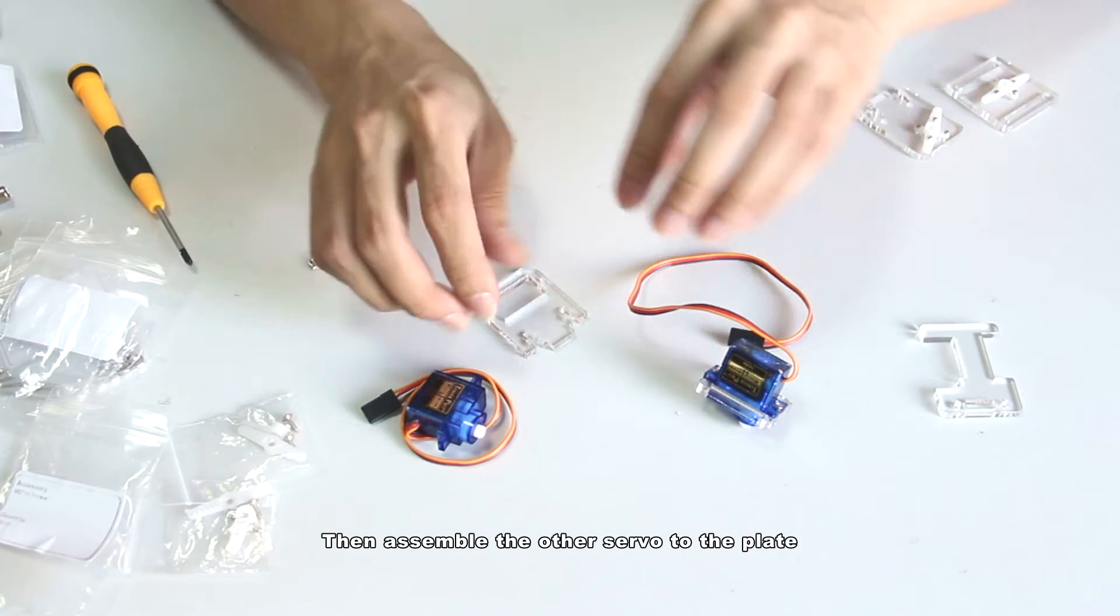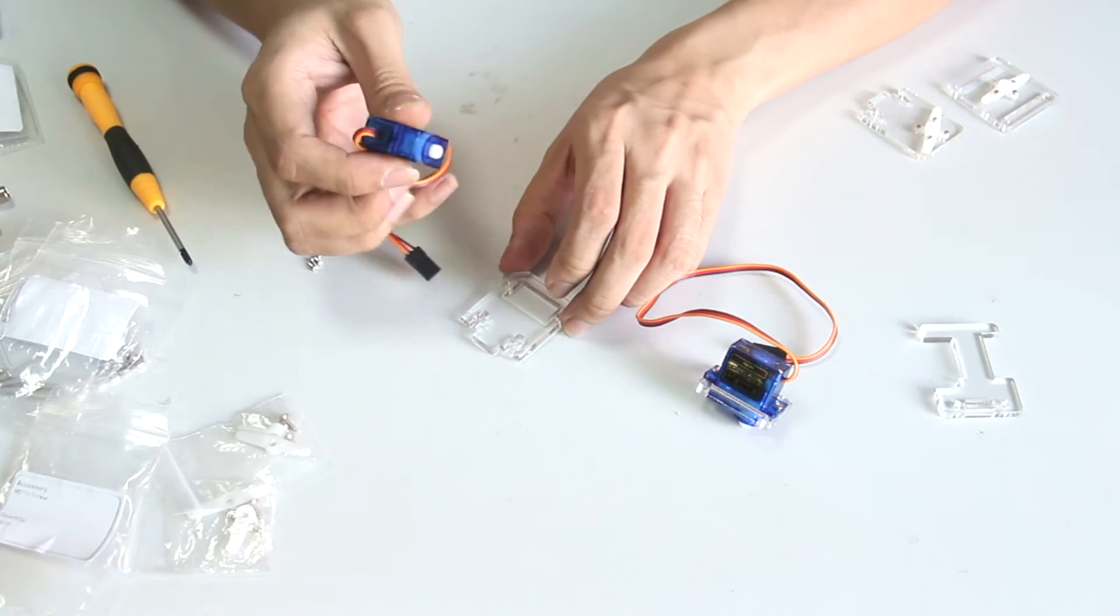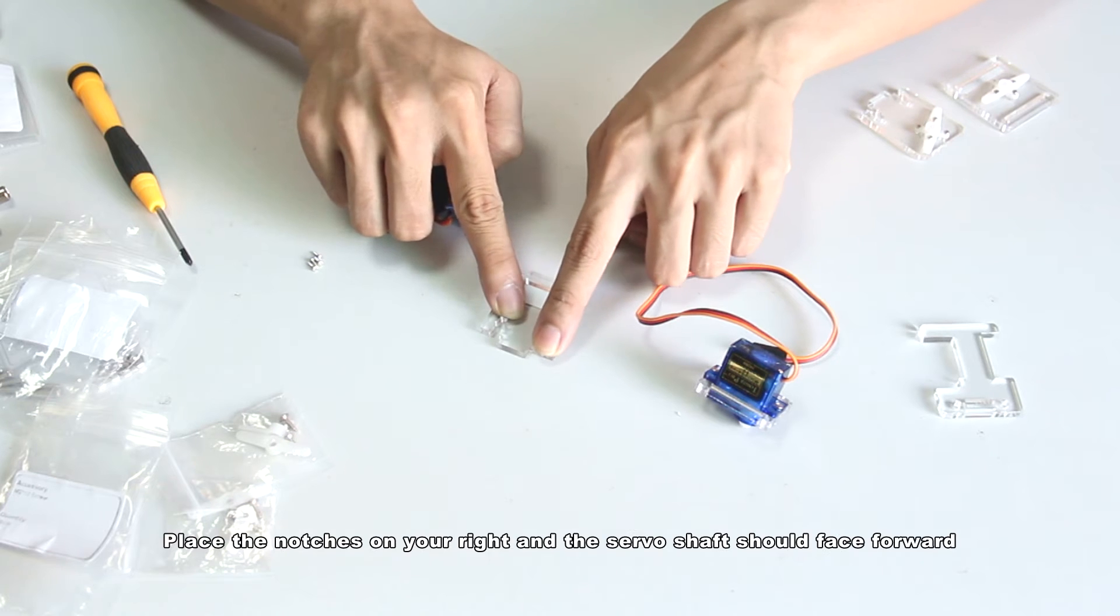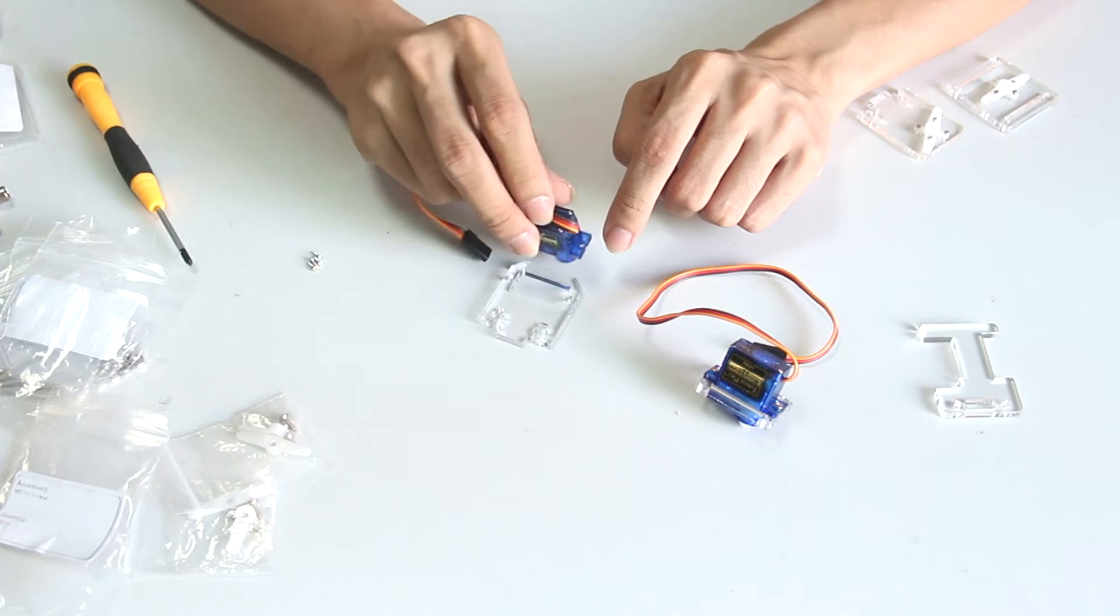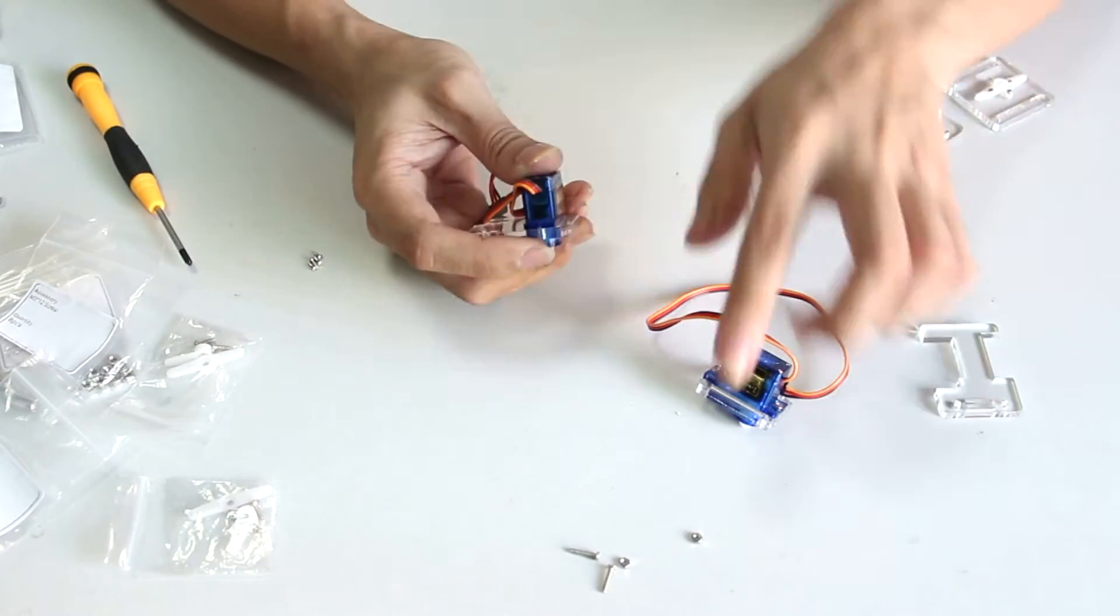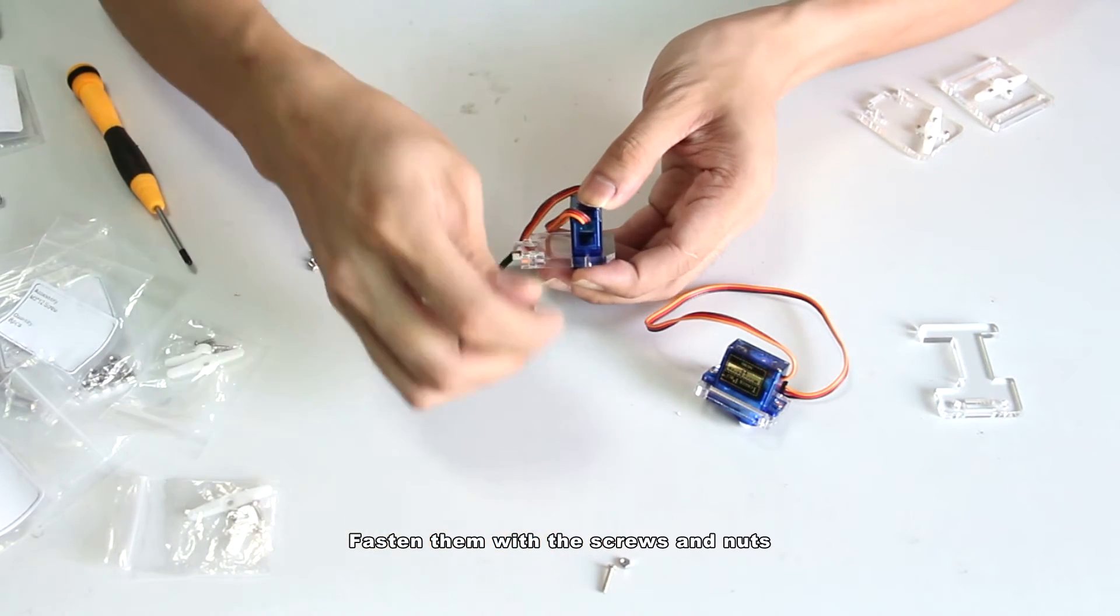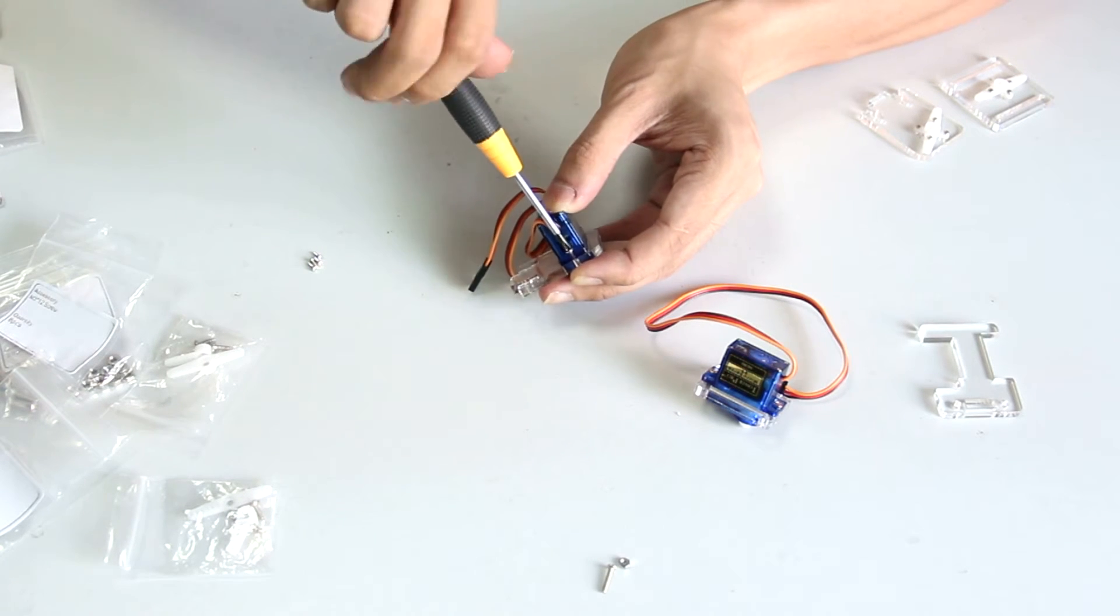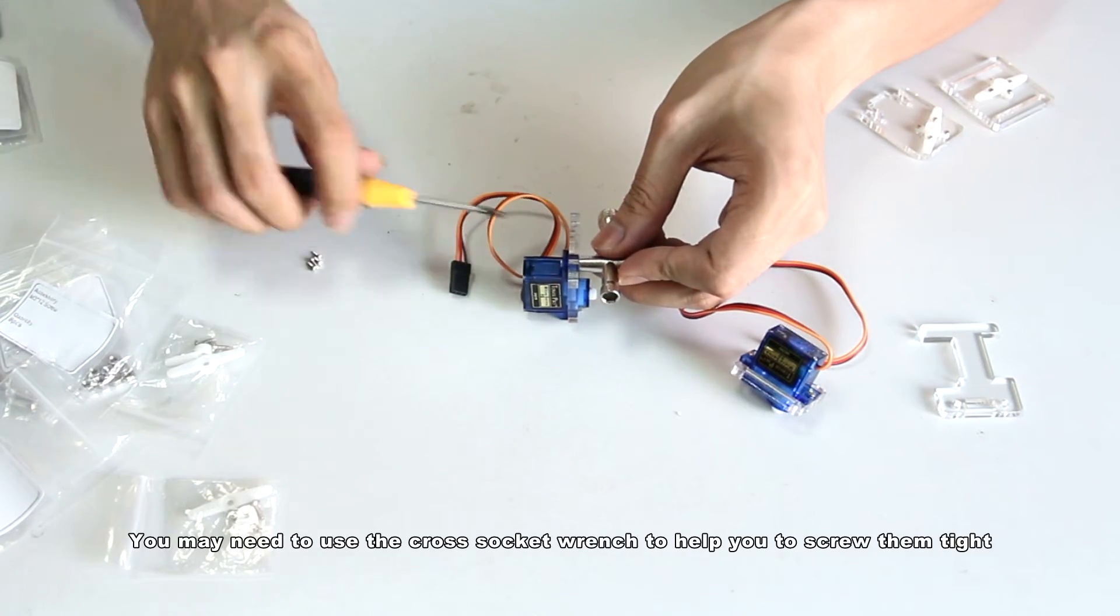Then assemble the other servo to the plate. There are two notches on the plate. Place the notches on your right and the servo shaft should face forward. Insert the servo. Fasten them with the screws and nuts. For this servo, we call it tilt servo. You may need to use the quad socket wrench to help you to screw them tight.